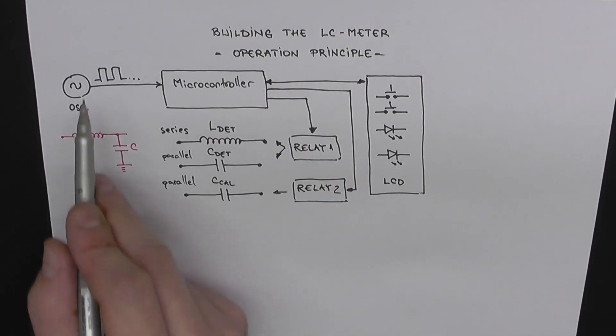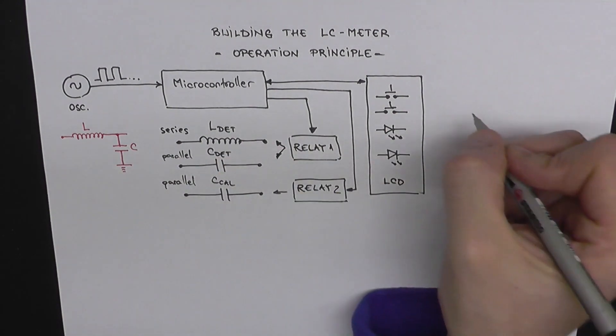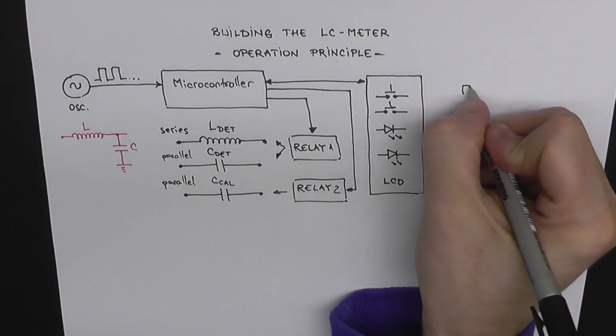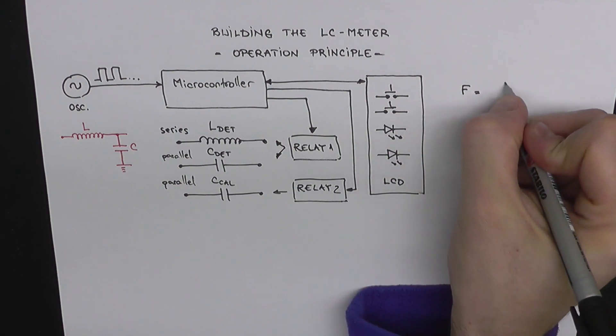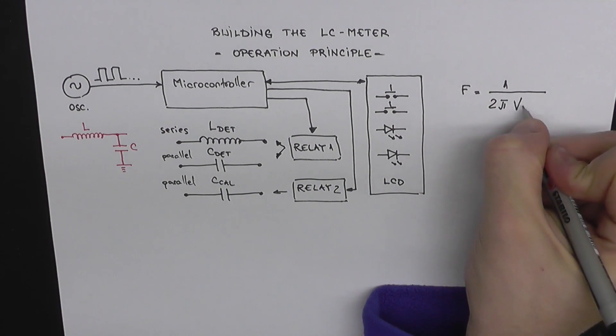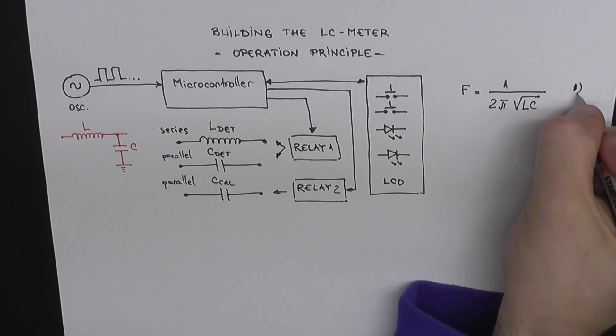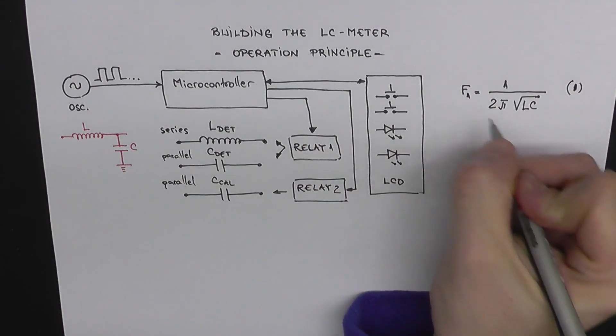So this oscillator here will output a signal. And first, we'll use the AVR to measure this frequency. Now there is a little bit of math involved here, some basic equations, but don't worry, I'll walk you through it. So we can write the first equation, which involves the frequency we just measured: F equals 1 over 2π square root from LC. And we're going to name this equation 1, and we're going to name this frequency F1.